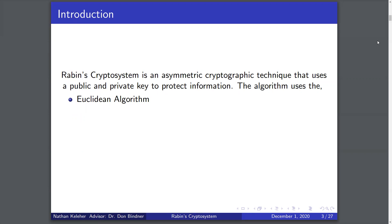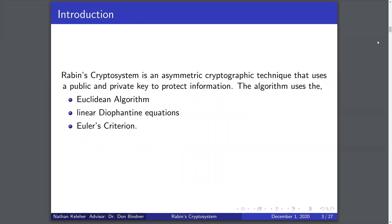Rabin's cryptosystem is an asymmetric cryptosystem. An asymmetric cryptosystem makes use of private and public keys, which are used to encrypt and decrypt information to keep it private from third-party sources. Throughout the decryption process, Rabin's cryptosystem makes use of the Euclidean algorithm, looks at linear Diophantine equations, and uses Euler's criterion to verify that a plaintext message is a potential ciphertext message.